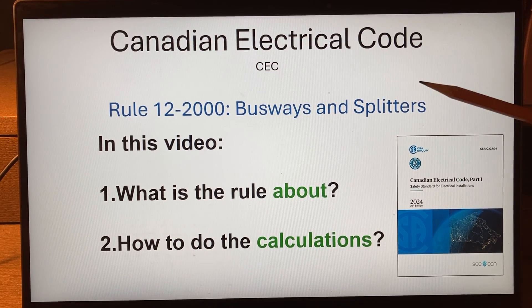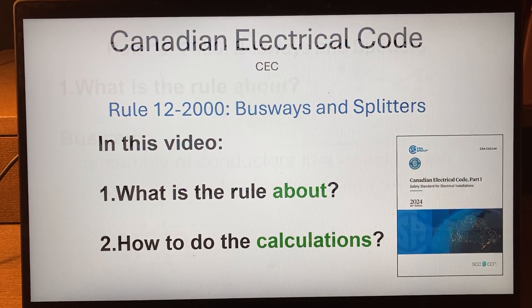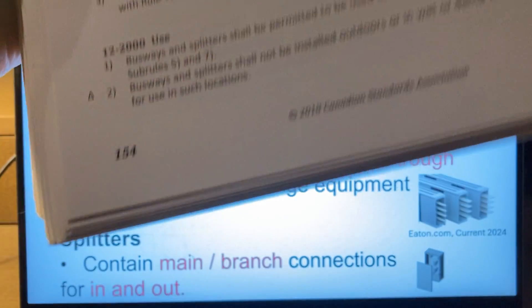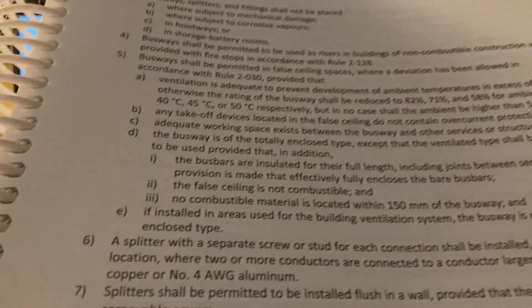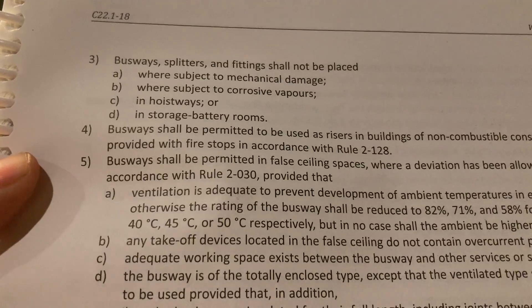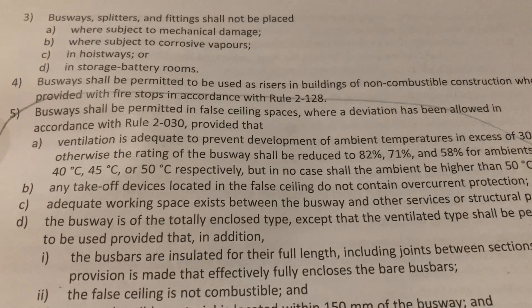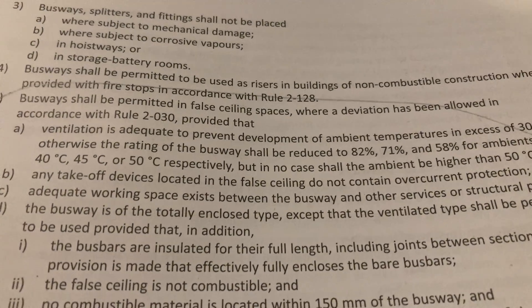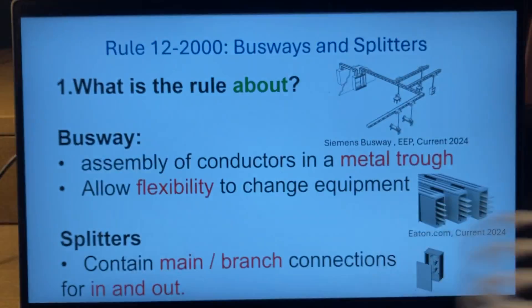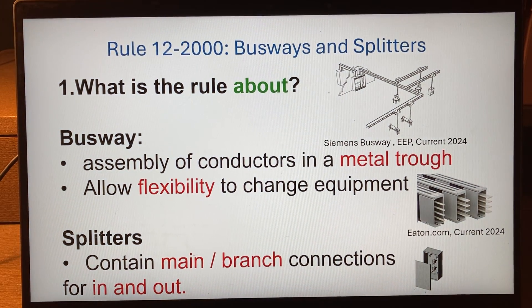I'm going to focus on rule 12-2000, and that's about busways and splitters. We're going to talk about what this rule is about and what the calculations are. You find this rule in the Canadian Electrical Code — busways and splitters — it has seven sub-rules. The calculations in this section are in sub-rule 5, which helps you calculate the ventilation that will be adequate to make sure you are not overheating inside these busways.